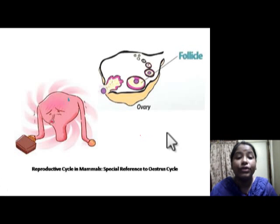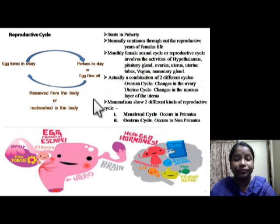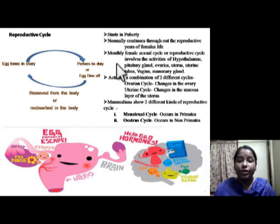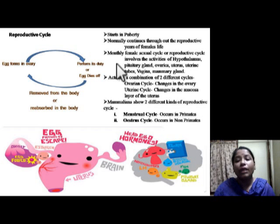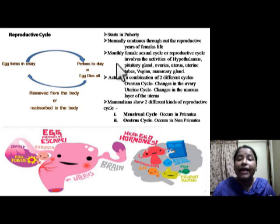Today I will talk on the reproductive cycle in mammals with special reference to the estrus cycle. A cycle means a process that starts from one point to the next and repeats. The reproductive cycle means an egg forms in the female body, performs its duty of fertilization, or dies and the body removes the unfertilized egg through the vagina or reabsorbs it inside the uterus.